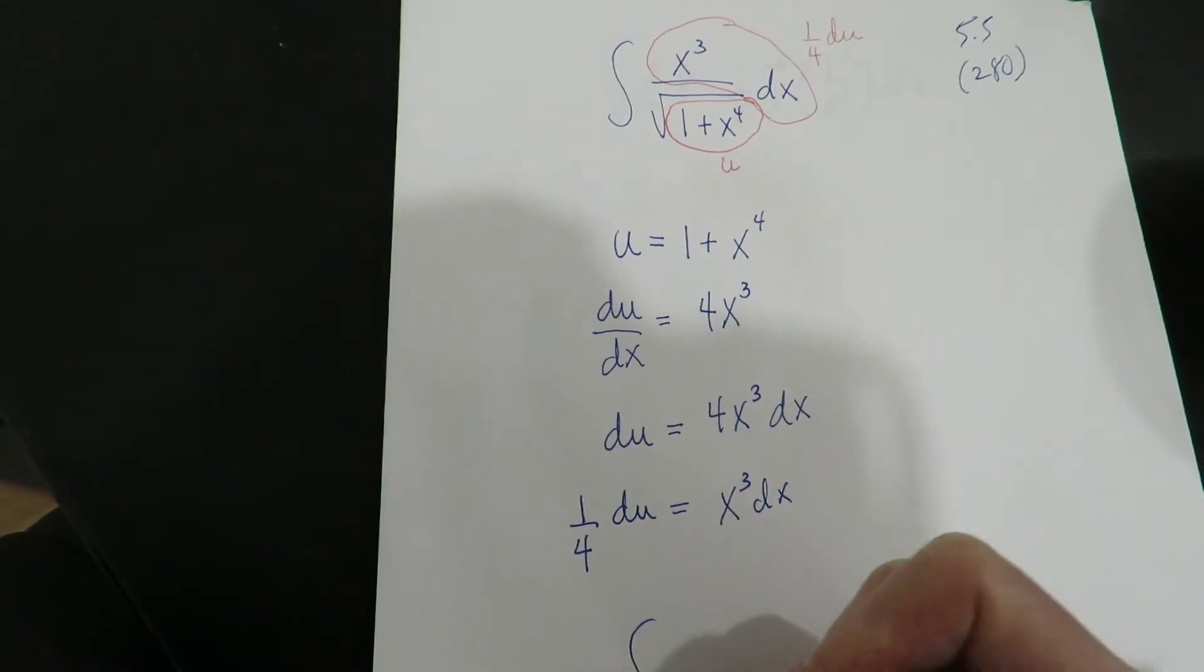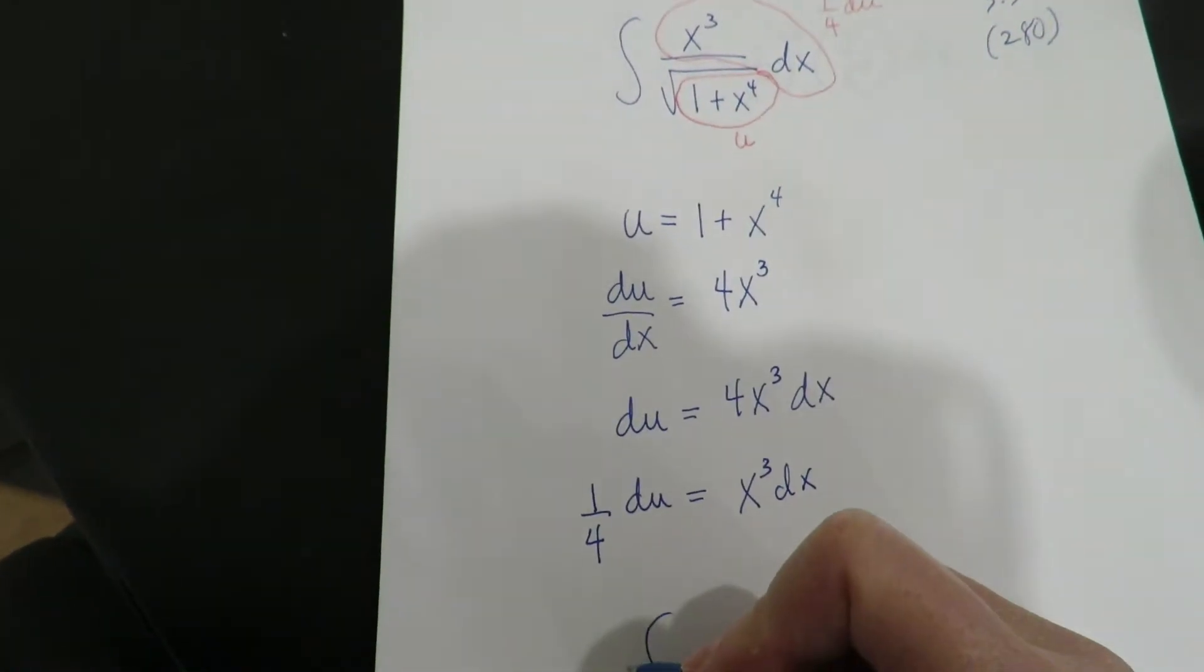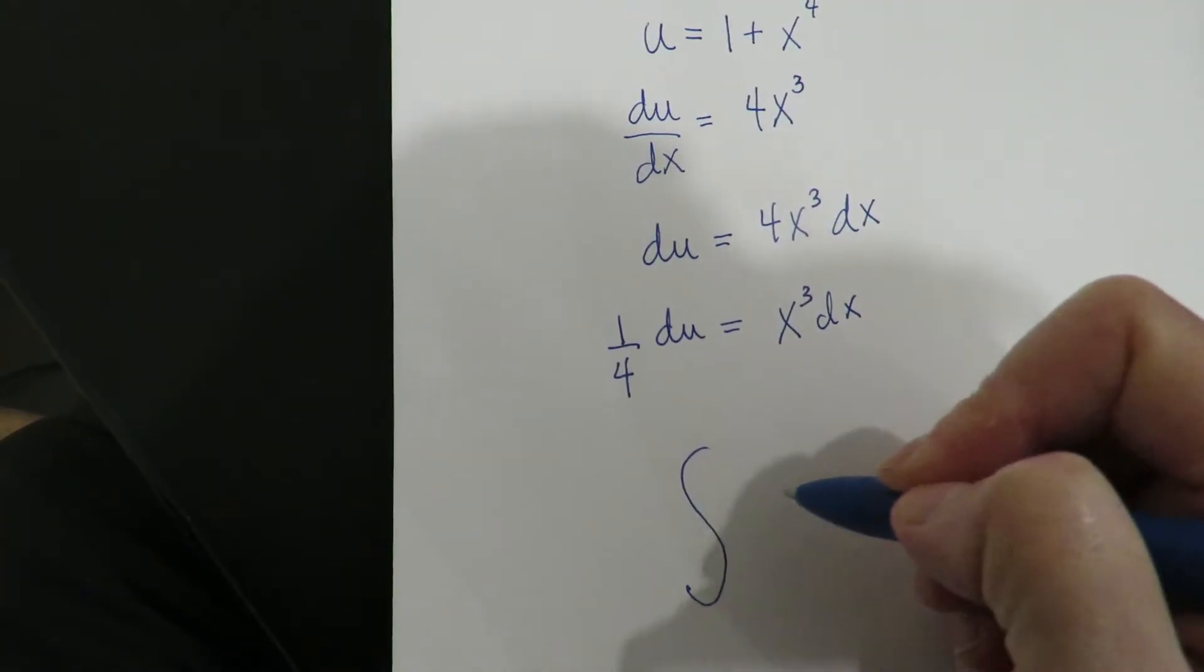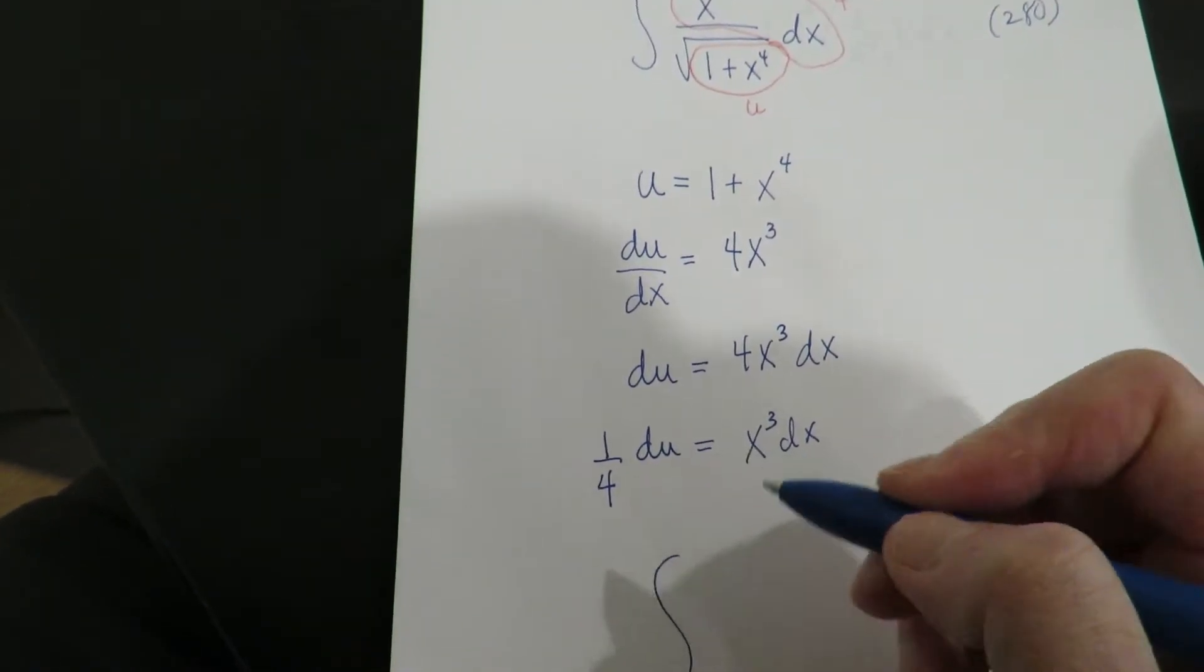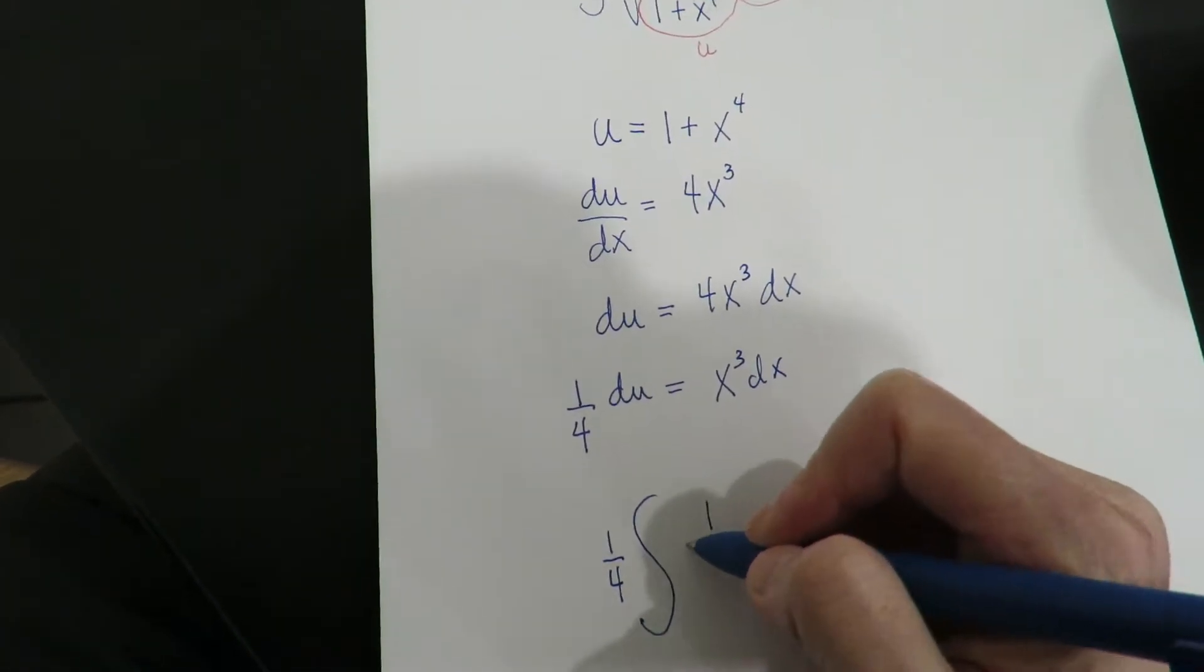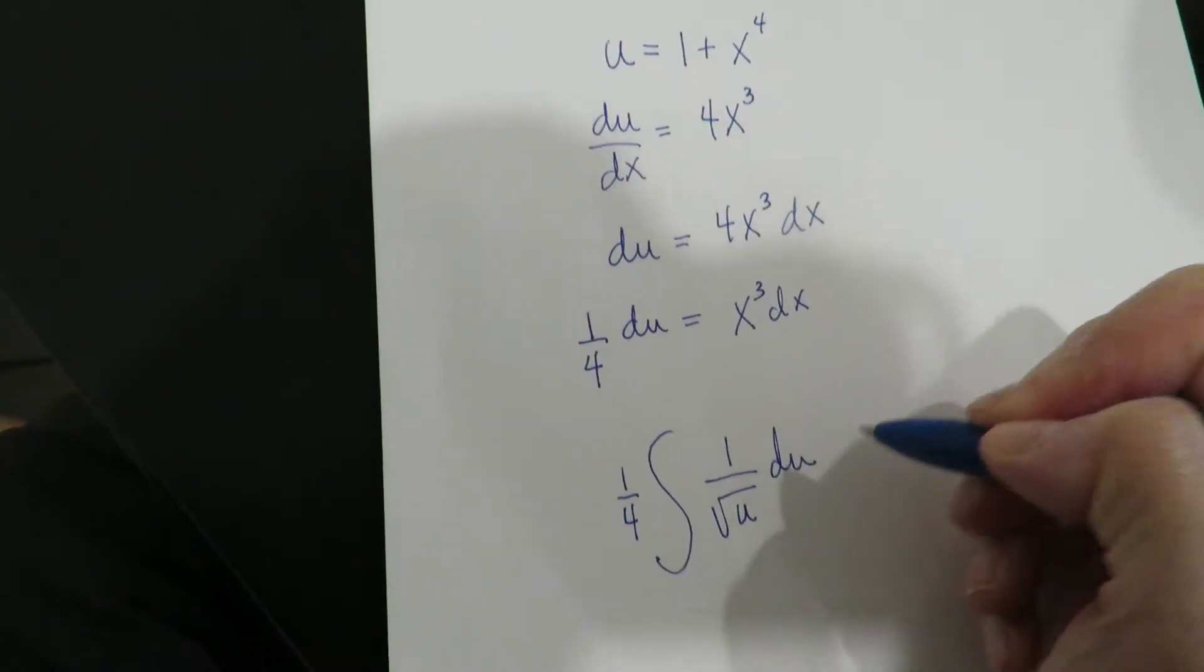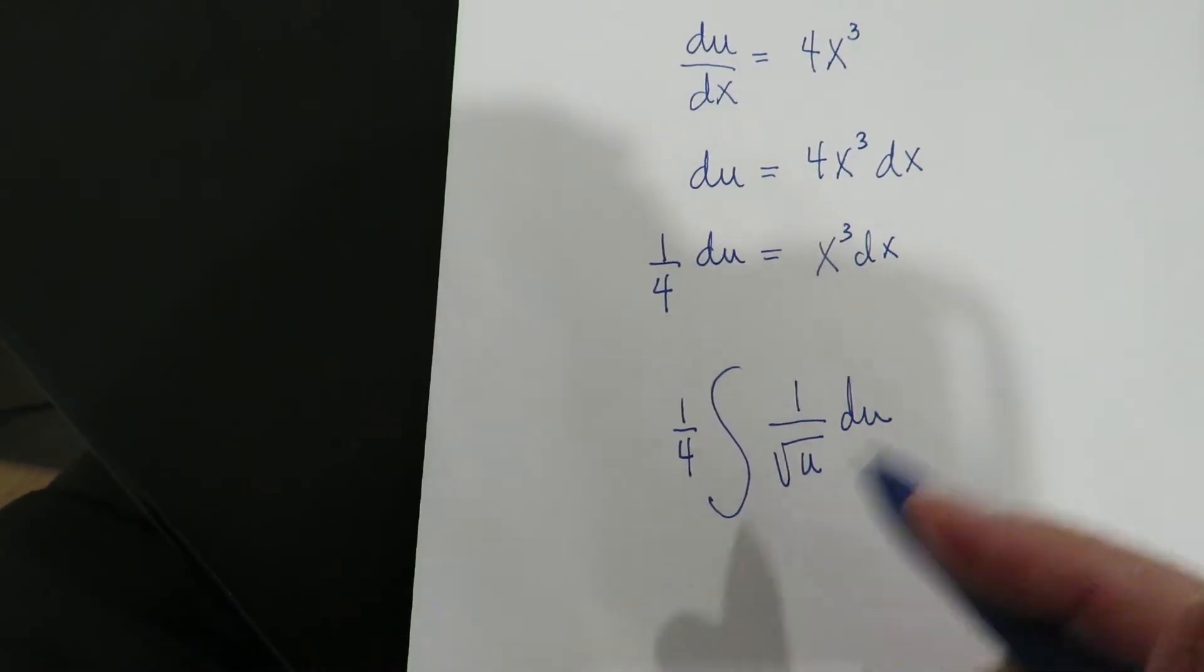You can pull the 1/4 out or leave it in; it doesn't matter because it's a multiplier. For some people it's easier to write it out front; it just depends how you want to write it. It just means your answer is going to be 1/4 larger. You can put the 1/4 here or you put it out here; it doesn't matter.